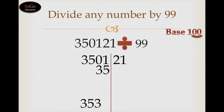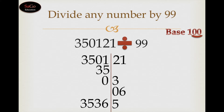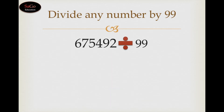Now this 3 would be added under the next two digits, which is 1 and 2. We write 03 and add only one digit: 1 plus 5 plus 0 is 6. Write 6. Now this 6 would be added under the next two digits, which is 21. Write 06. Now we add to get the remainder: 2 plus 3 plus 0 is 5, write 5; 1 plus 6 is 7, write 7. So 3536 is the quotient and 57 is the remainder.